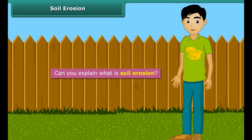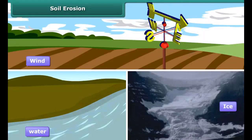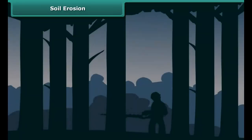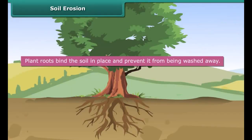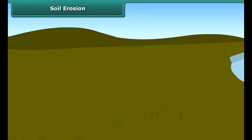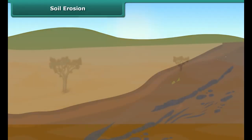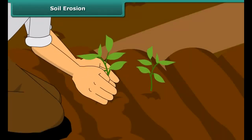Can you explain what is soil erosion? Well, soil erosion is a process of removal of the top layer of the soil. But what causes soil erosion? Basically, it is caused by the action of wind, water and ice. These are the agents of soil erosion. Apart from natural agents, human activities like cutting down the trees also causes soil erosion. Plant roots bind the soil in place and prevent it from being washed away. So, if there will be no trees, floods will occur which will leach the soil nutrients and eventually the land will become barren, which cannot be used for vegetation. Therefore, more trees should be planted in order to prevent soil erosion.